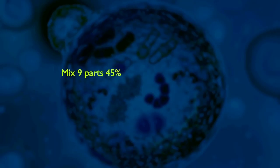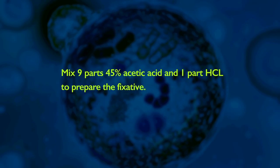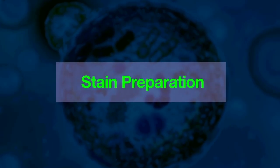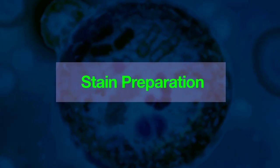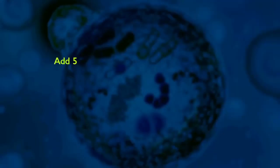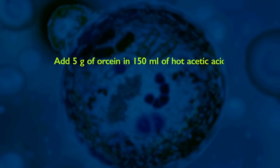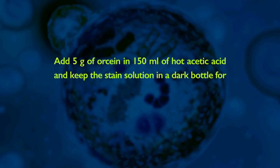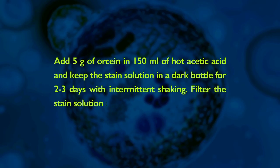Next is fixative preparation. Mix 9 parts 45% acetic acid and 1 part HCl to prepare the fixative. For stain preparation, dissolve 5 grams of orcein in 150 ml of hot acetic acid and keep the stain solution in a dark bottle for 2-3 days with intermittent shaking. Filter the stain solution and store it in a dark bottle.